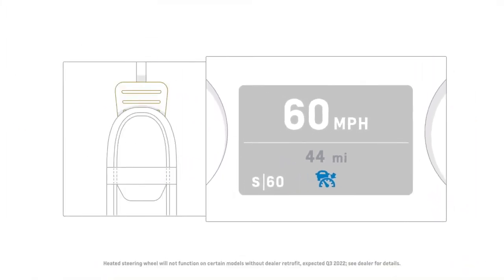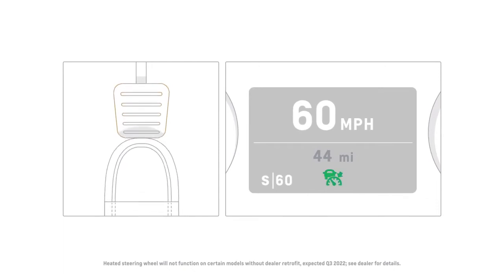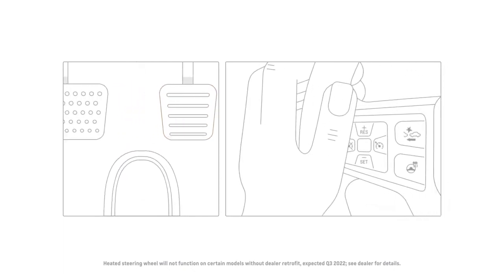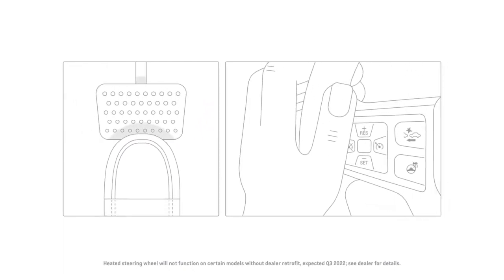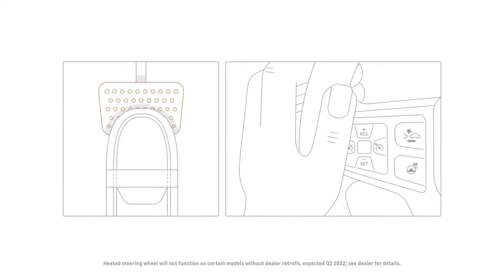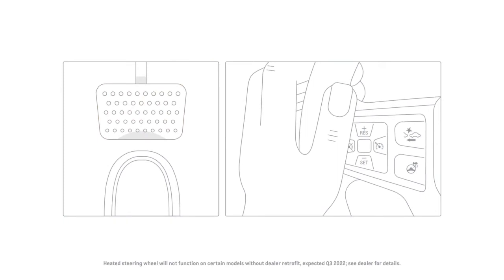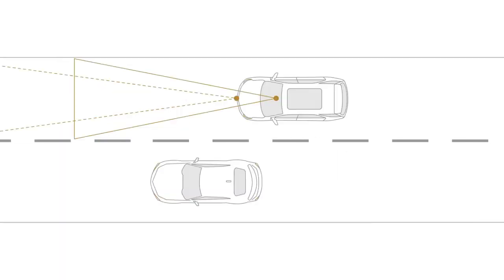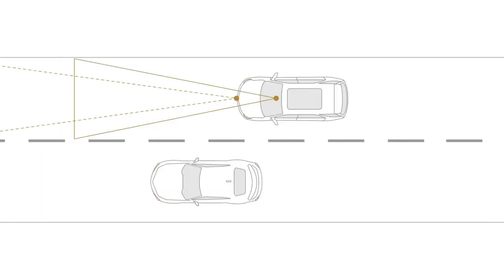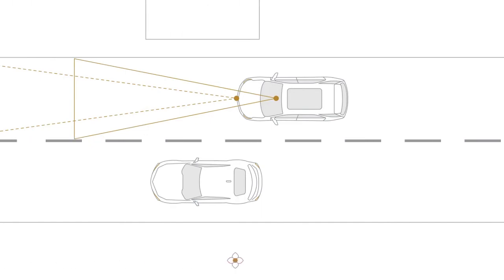To resume Adaptive Cruise Control, take your foot off the accelerator. To cancel Adaptive Cruise Control, press the brake. To return to the stored set speed, press the Resume or Plus button. If the system doesn't detect a vehicle ahead, Adaptive Cruise Control works just like Cruise Control and maintains a driver-selected cruise speed.